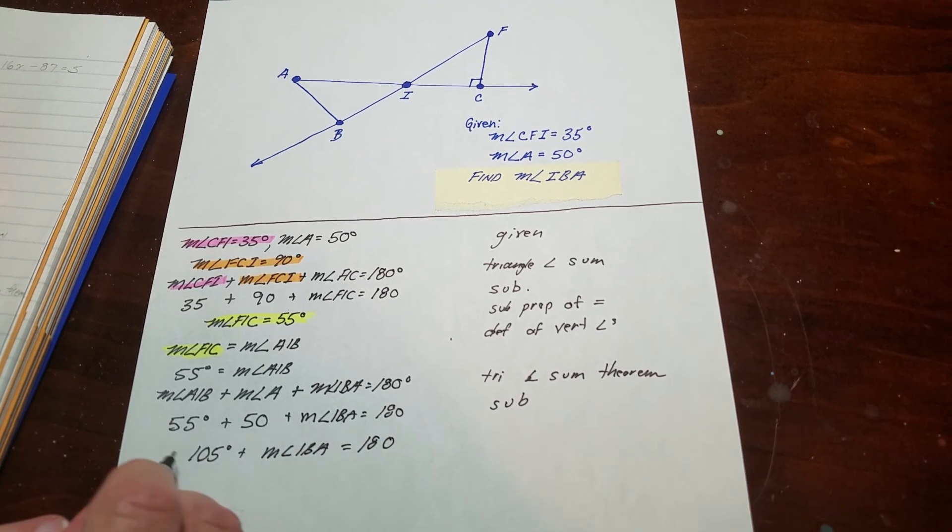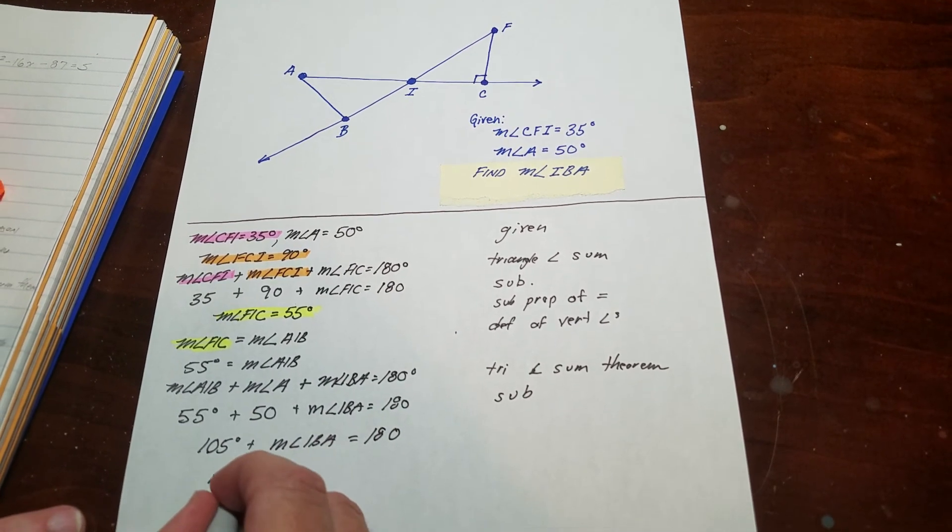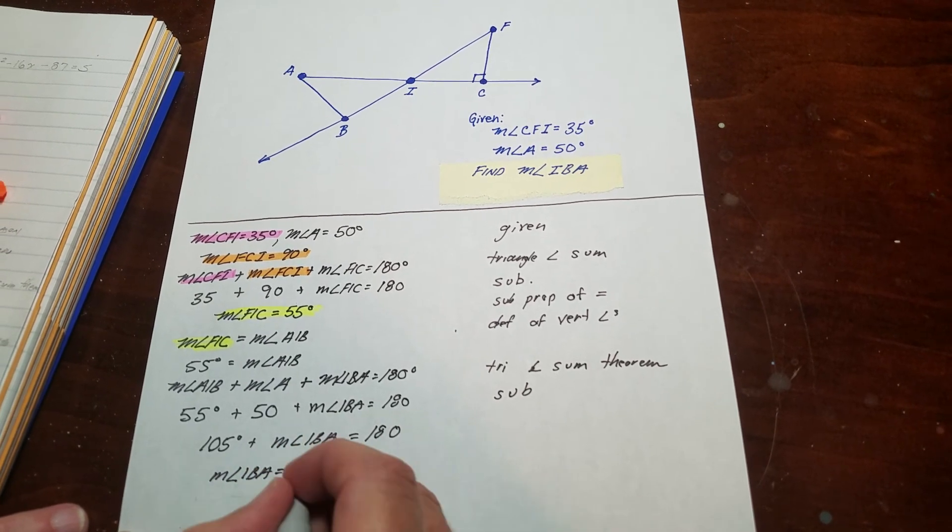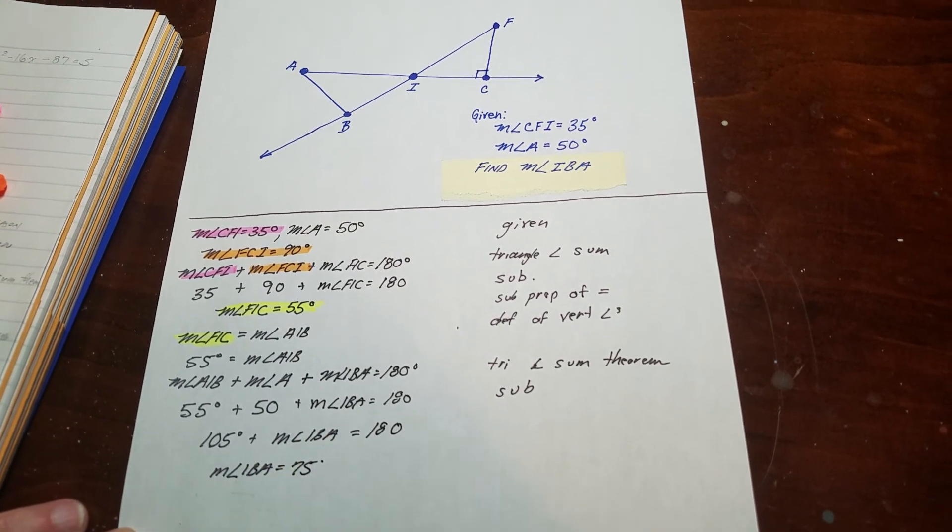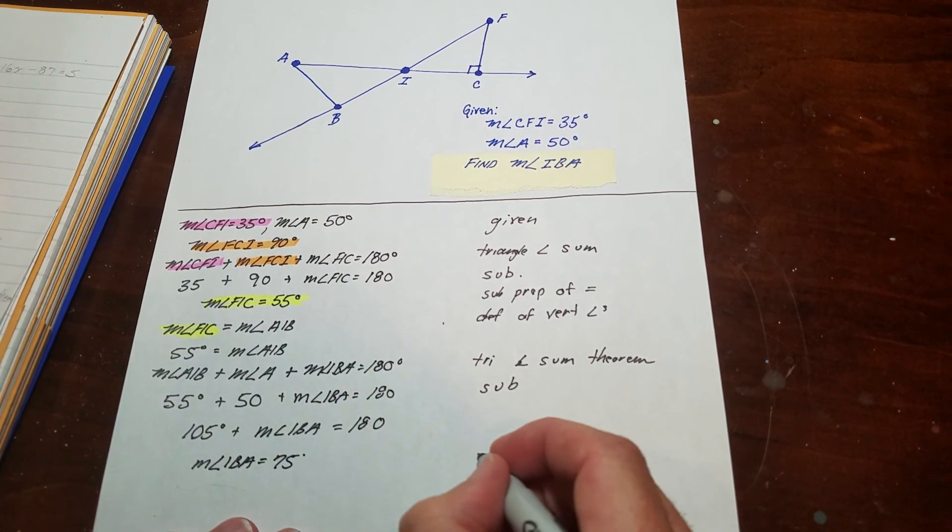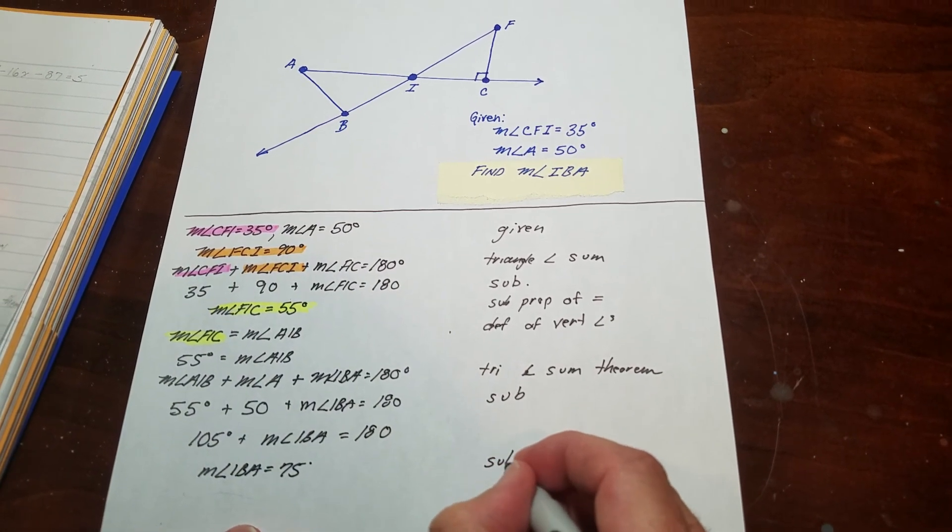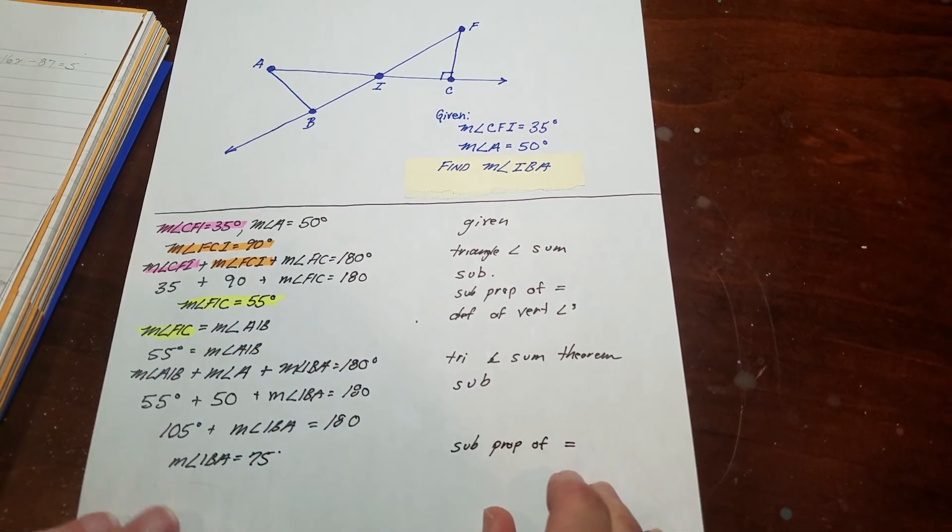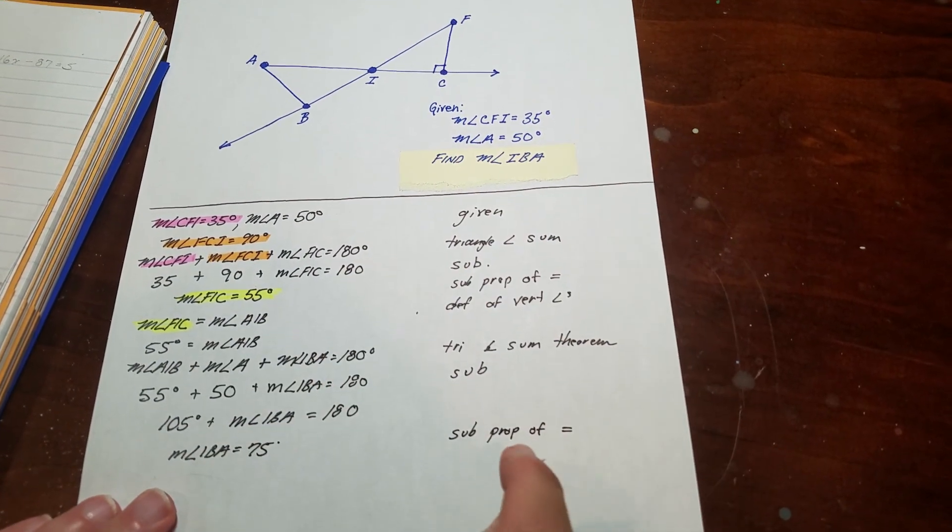These two angles add to 105. Then I subtract that from 180. I did it in two steps here, but that's okay. Nothing wrong with showing more work. That was the subtraction property of equality. So I figured out the measure of angle IBA.